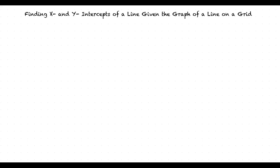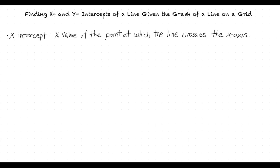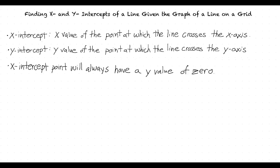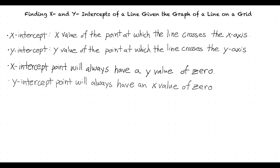What are the x and y intercepts of the line? The x intercept of a line is the x value of the point at which the line crosses the x axis. The y intercept of a line is the y value of the point at which the line crosses the y axis. The x intercept is also the point on the line with a y value of 0, and the y intercept is also the point on the line with an x value of 0.